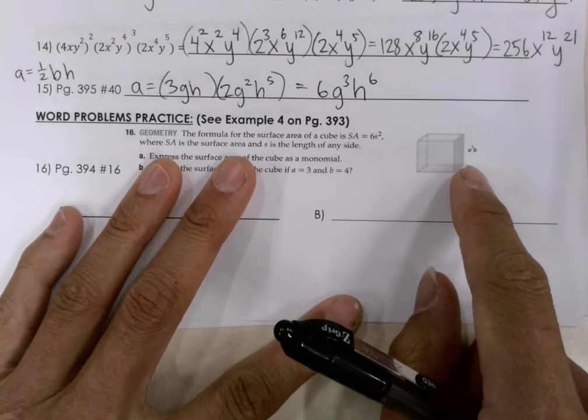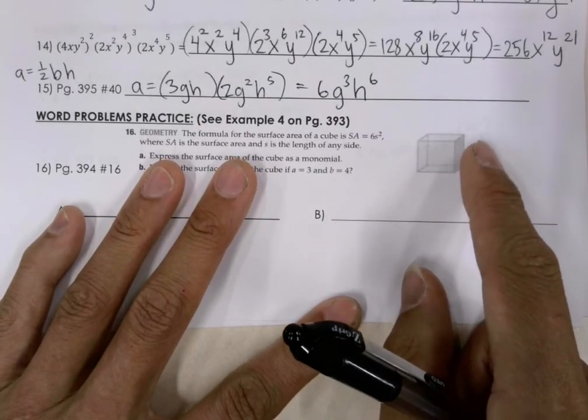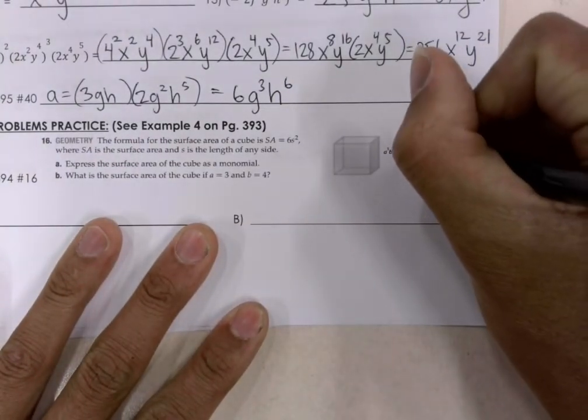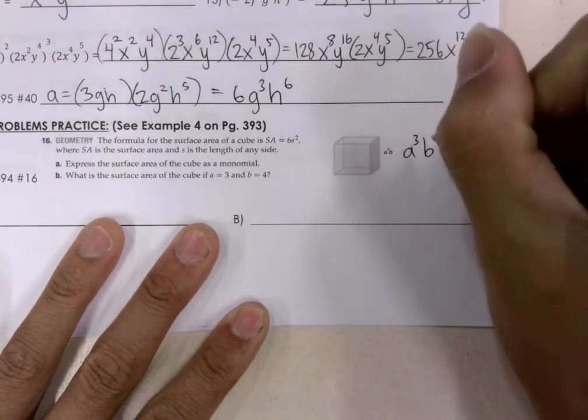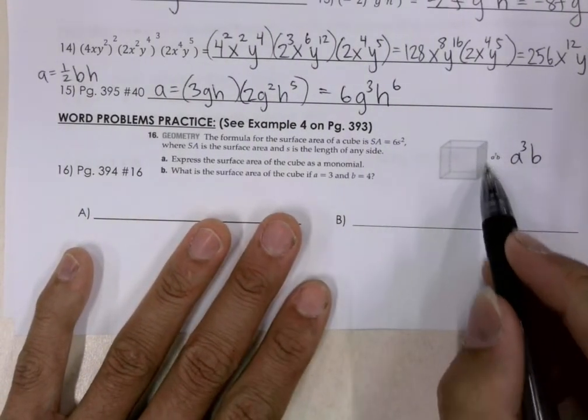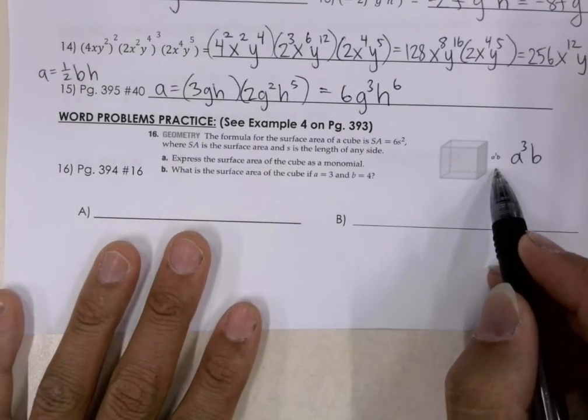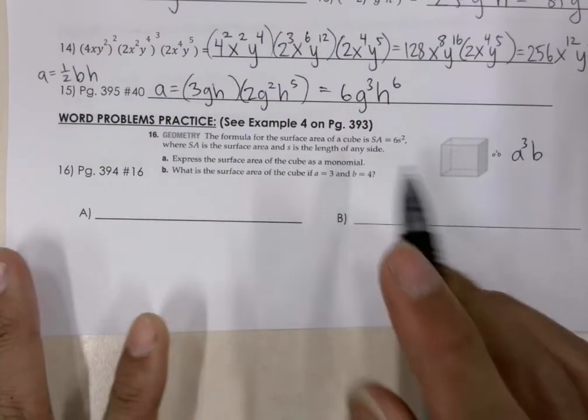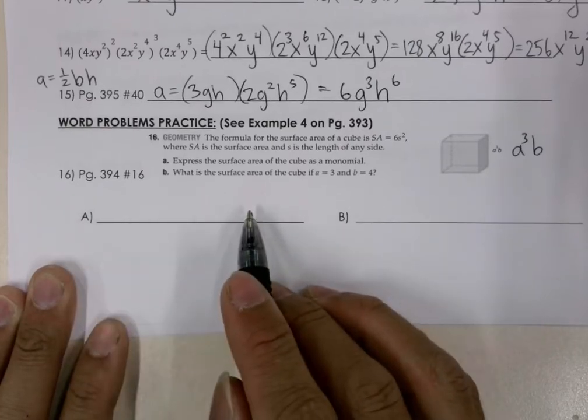And you can see here in the drawing, it's A to the power of 3 times b is the length of one of the sides of the cube. So we want to express the area of the cube as a monomial and write our answer here.